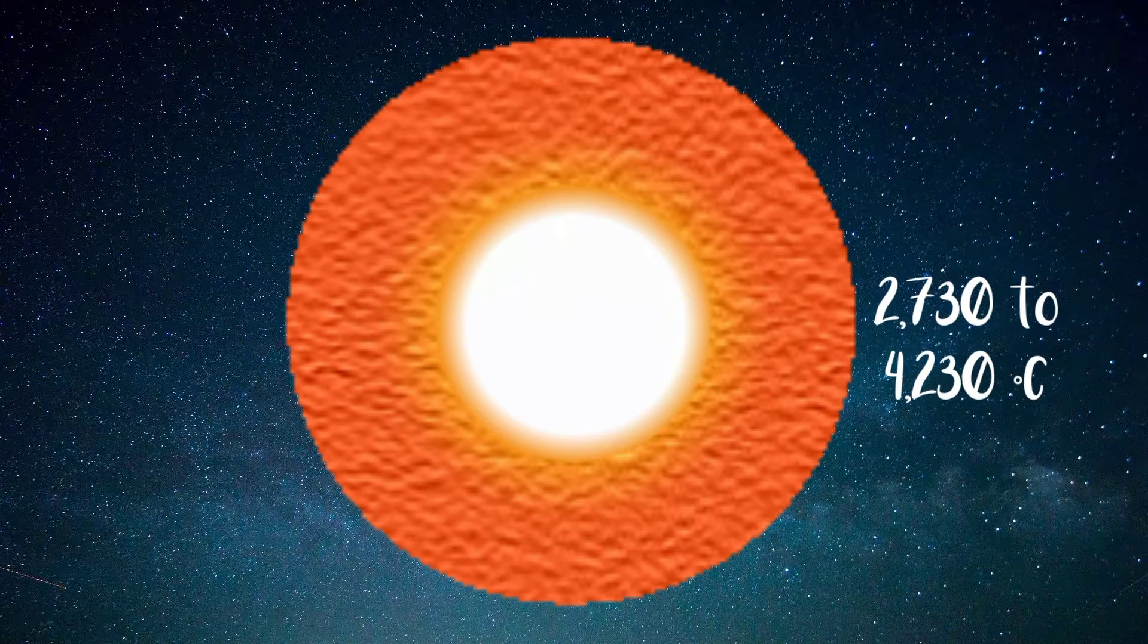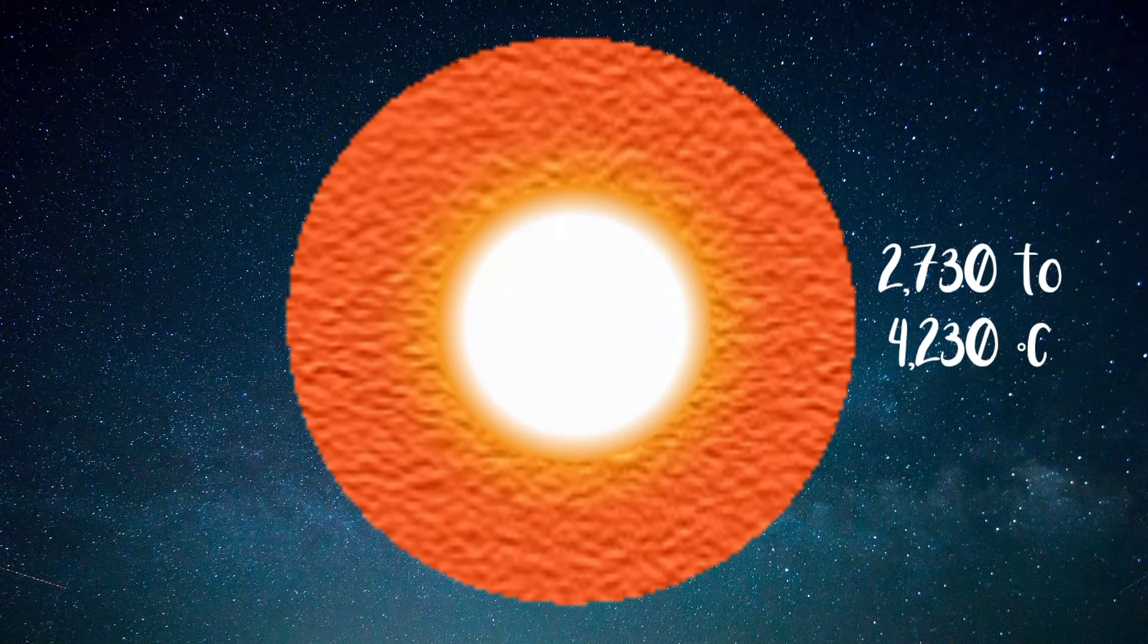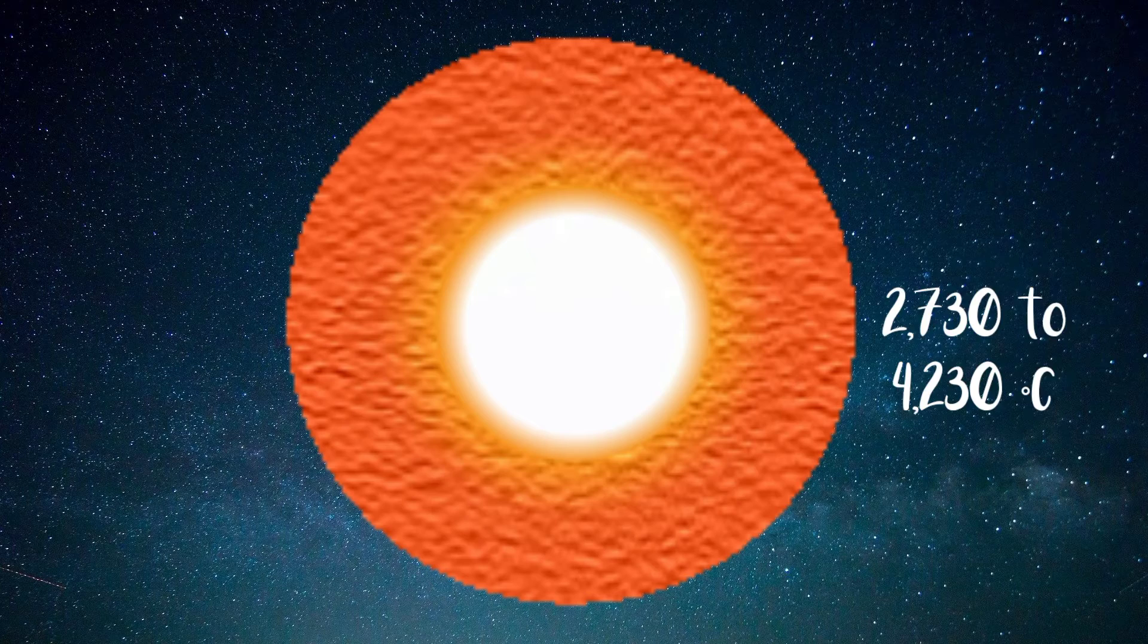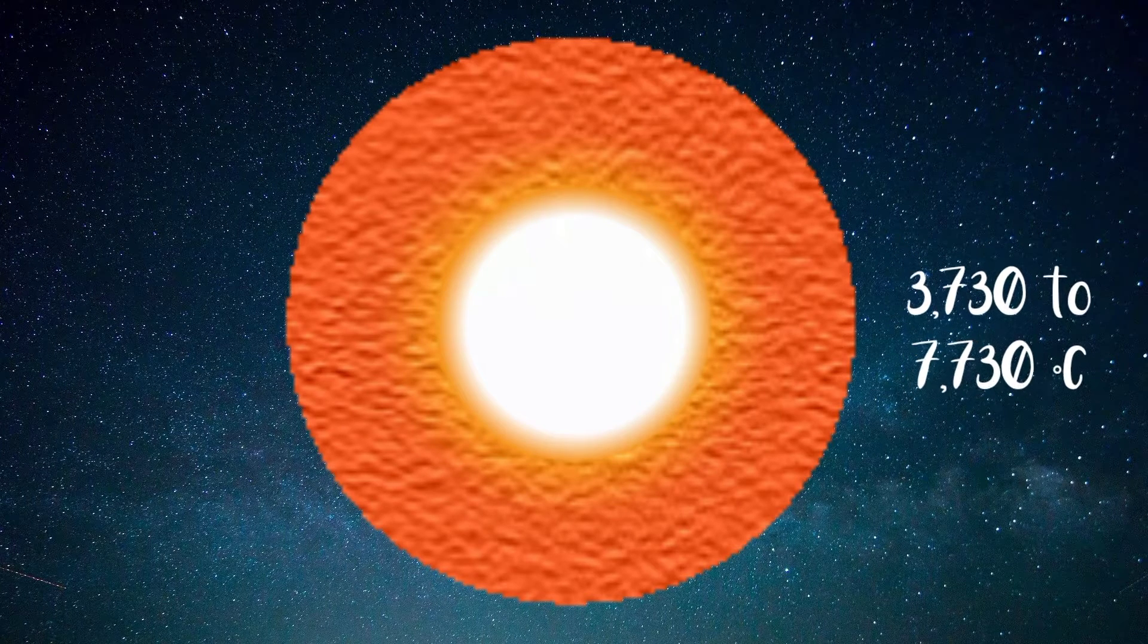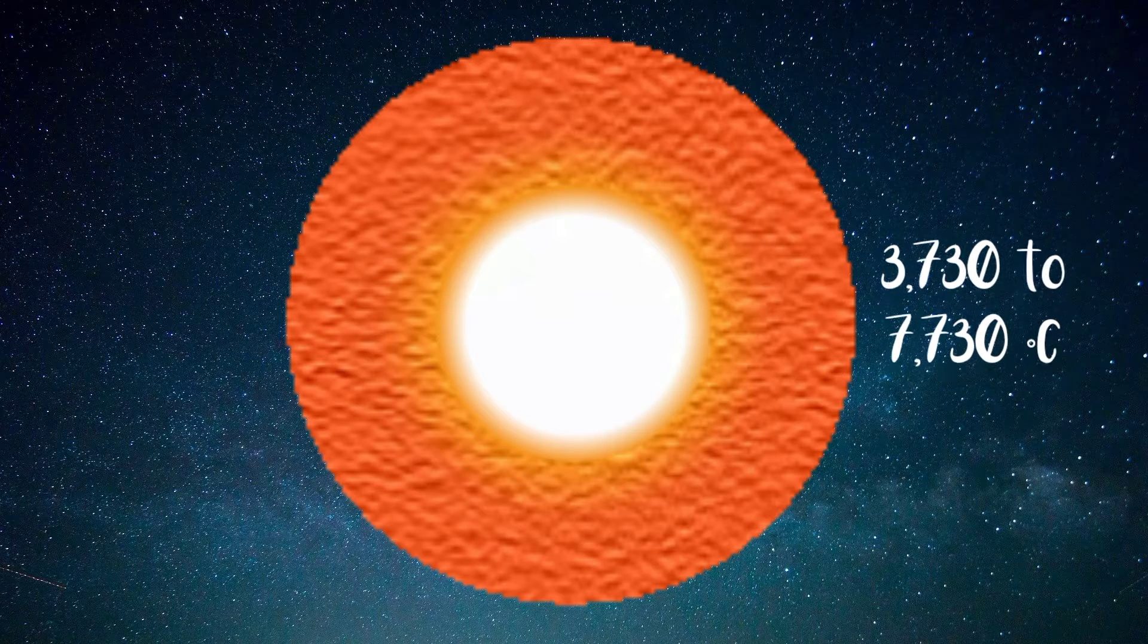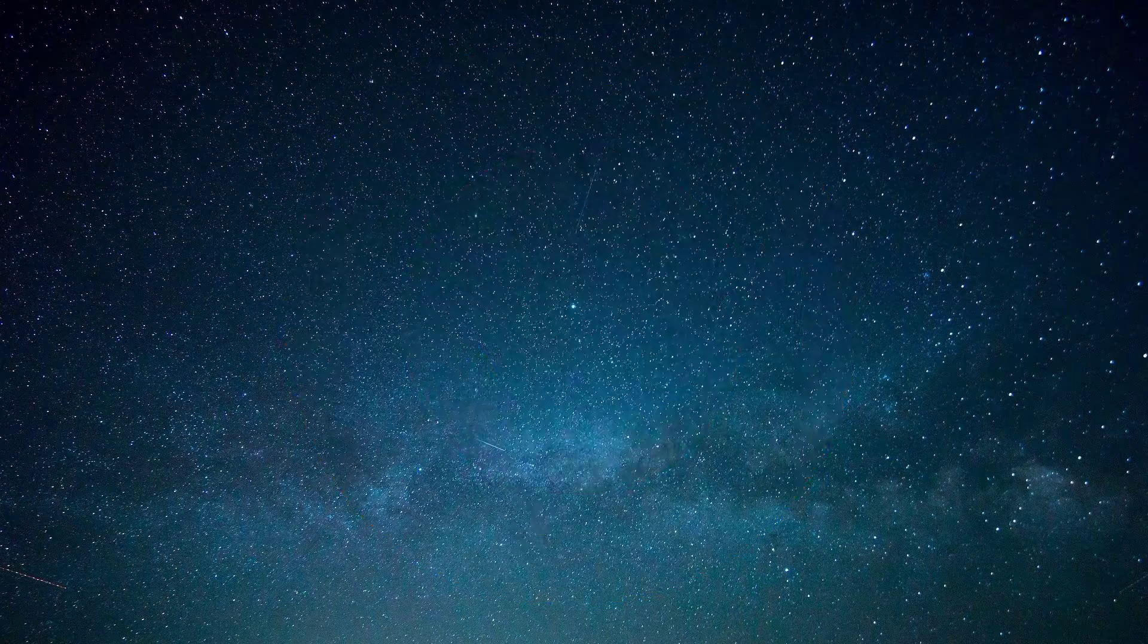Estimates for the temperature of the outer core are about 2,730 to 4,230 degrees Celsius in its outer region and 3,730 to 7,730 degrees Celsius near the inner core.